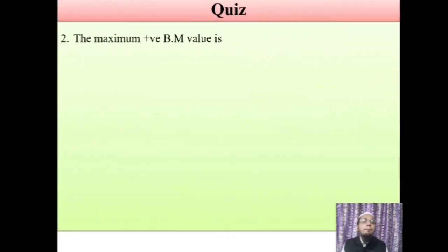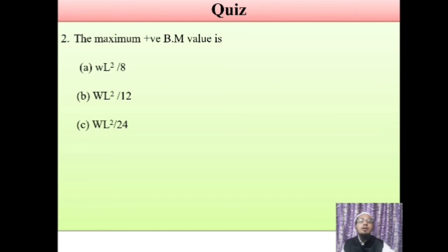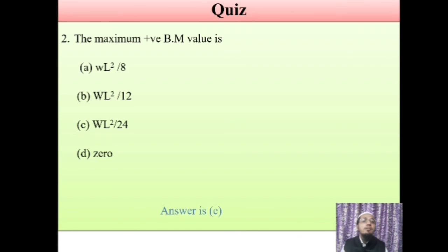Second question: the maximum positive bending moment value in case of fixed beam subjected to UDL — after merging the two diagrams — what is the maximum positive bending moment? Options: WL²/8, WL²/12, WL²/24, or 0. The correct answer is option C — WL²/24. It is obtained by taking the difference between WL²/8 and WL²/12 in the bending moment diagram.